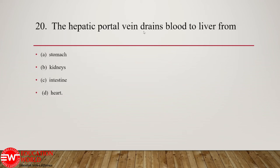Question number 20: the hepatic portal vein drains blood to the liver from the stomach and intestine. Both option A and option C are correct. The hepatic portal vein primarily drains blood from the alimentary canal. Blood enters the liver from two sources: from the hepatic artery it gets oxygenated blood, and from the hepatic portal vein it receives deoxygenated blood. Blood in the hepatic portal vein comes directly from the intestine, containing newly absorbed nutrients, and the stomach.